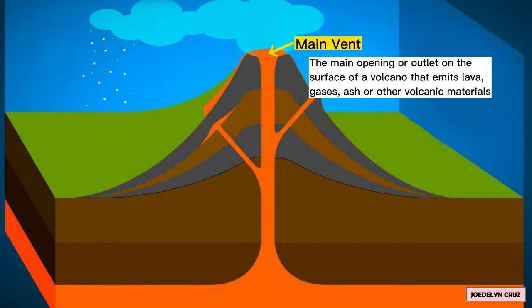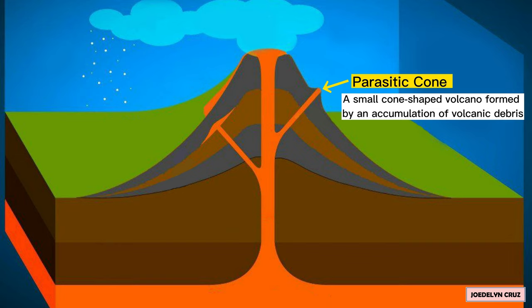Parasitic cone. Parasitic cone is a small cone-shaped volcano formed by an accumulation of volcanic debris.